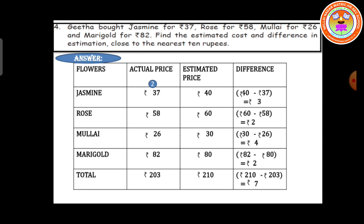Next problem: Geetha bought jasmine for 37 rupees, rose for 58 rupees, mullai for 26 rupees, and marigold for 82 rupees. Find the estimated cost and difference in estimation close to nearest 10 rupees. Write down the flower names and actual prices. Jasmine actual price is 37 rupees; estimated price is 40. The difference is 40 minus 37, giving 3 rupees. Rose: actual price is 58 rupees; estimated price is 60 because 8 is greater than 5, so add plus 1. The difference is 60 minus 58, giving 2 rupees.